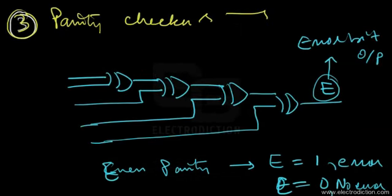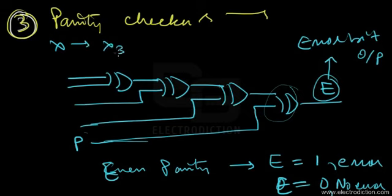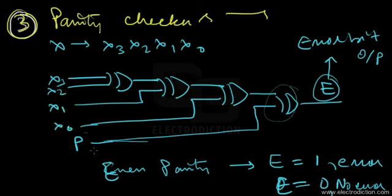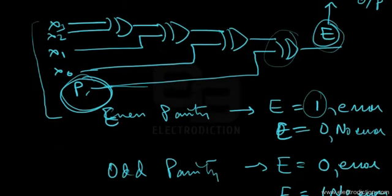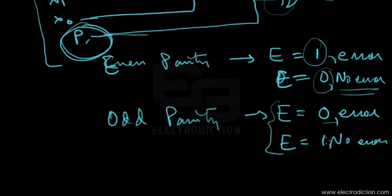The parity checker monitors the incoming data — the input number X3, X2, X1, and X0 is applied to the input terminals, with the parity bit applied to the last XOR gate input. Depending on the parity protocol, the parity checker monitors whether the number of ones in the input data including the parity bit is even or odd, and outputs the error bit accordingly to indicate whether an error has occurred.